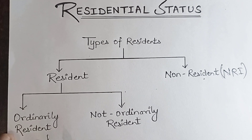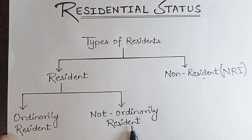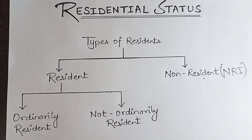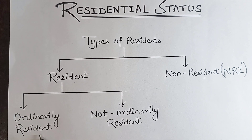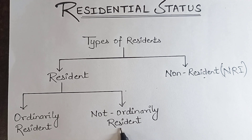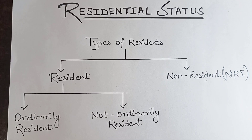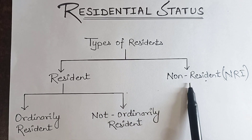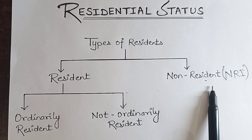Resident is of two types: ordinary resident or not ordinary resident. If you are living in India, you will be called an ordinary resident. If you are living outside India, you will be called not ordinary resident. And if you barely stay in India, you will be considered as NRI or non-resident of India.